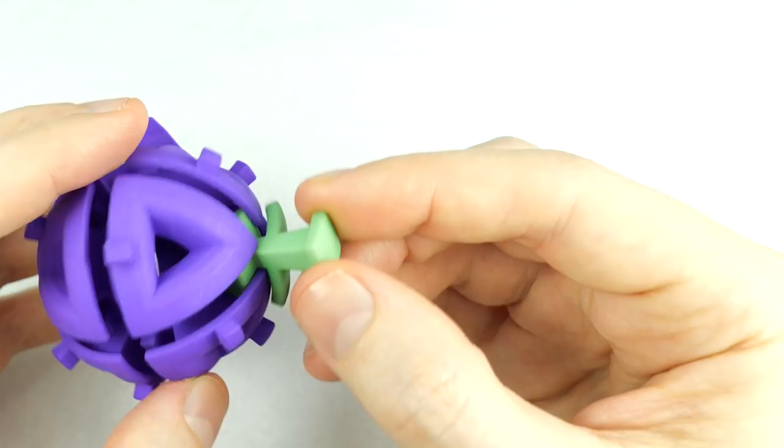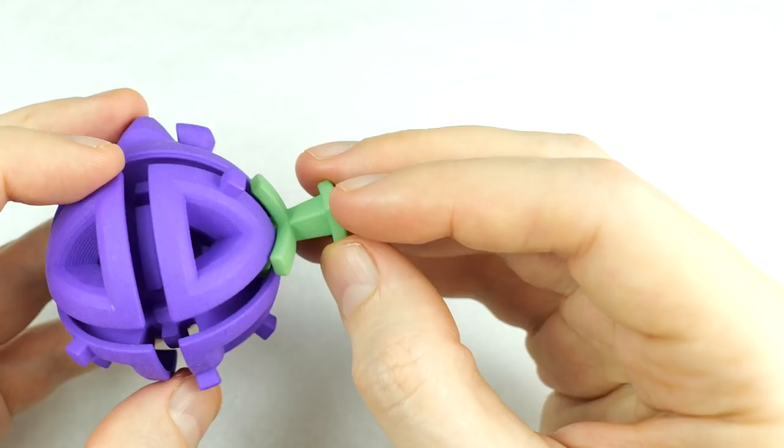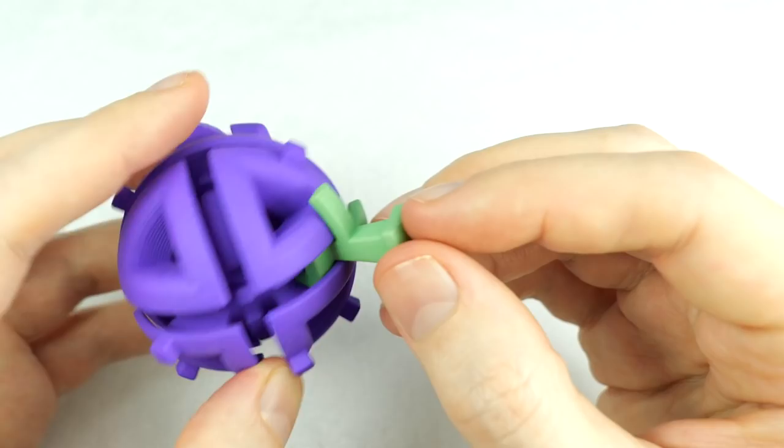There are six positions the rook could be in, and four possible rotations for the rook in each position, so it's a maze with 24 nodes. How hard could it be? Well it isn't a very difficult puzzle, but it is confusing. You can't see the whole maze at once.